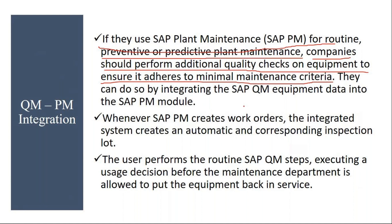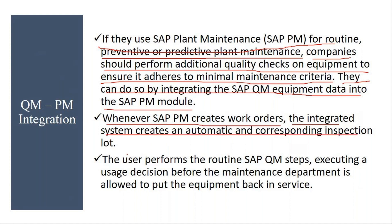They periodically calibrate the equipment in the quality control lab just to ensure that equipment is functioning properly. They can do so by integrating SAP QM equipment data into the SAP PM module. Whenever SAP PM creates work orders, the integrated system creates an automatic corresponding inspection. In the PM module, when they create a calibration order, it will automatically generate an inspection.